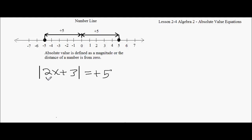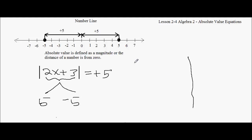Now let's change that to the absolute value of 2x plus 3 equals 5. The expression inside has to be 5 or negative 5 — there are two possibilities. So we set up two equations: 2x plus 3 equals 5, or 2x plus 3 equals negative 5.